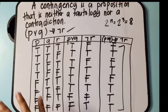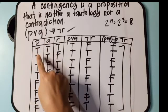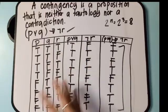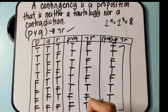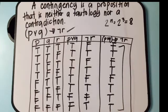As long as all the combinations of truth values for the three propositions are included, the order is okay. That ends our discussion about the differences of tautology, contradiction, and contingency. Thank you for watching. I hope you've learned something — see you in the next video!